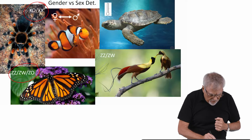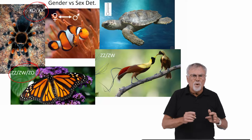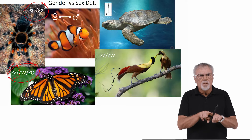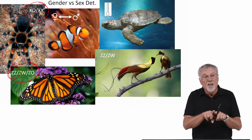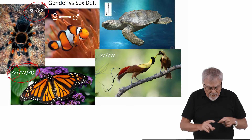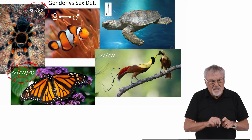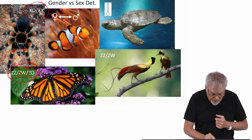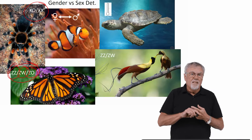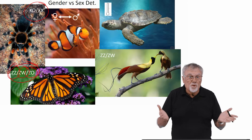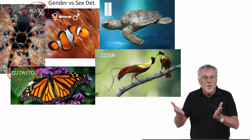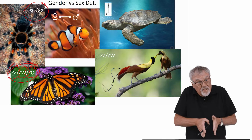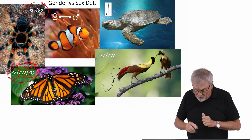In butterflies, it's a little more variable. The males get two of the same chromosomes — we call those Z chromosomes, so they're ZZ. And the females can either be ZW, with two different sex chromosomes, or they can be Z-naught, meaning they're absent one chromosome, similar to the XO case in male spiders, but in this case it's female butterflies.